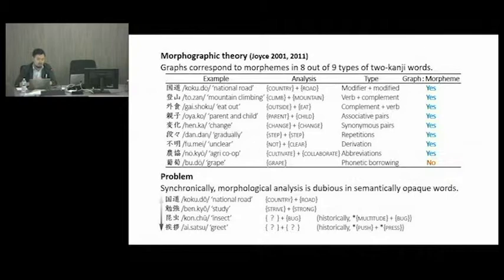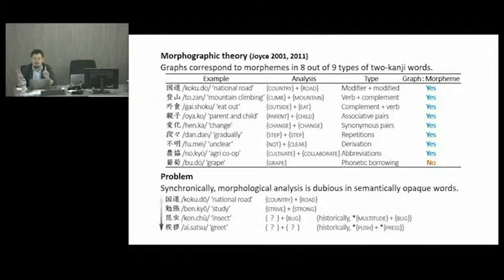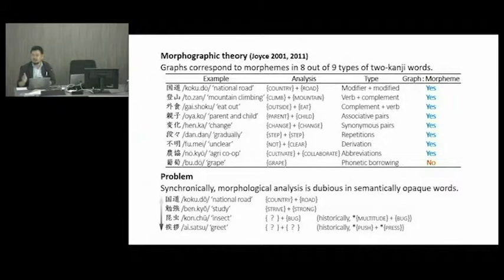So we have two graphs representing one morpheme, and these graphs indicate the phonological property of the word in question. I do agree with Joyce's idea that there is a general tendency for individual graphs to represent morphemes in Japanese. However, there is a serious problem: synchronically, morphological analysis is dubious in semantically opaque words.